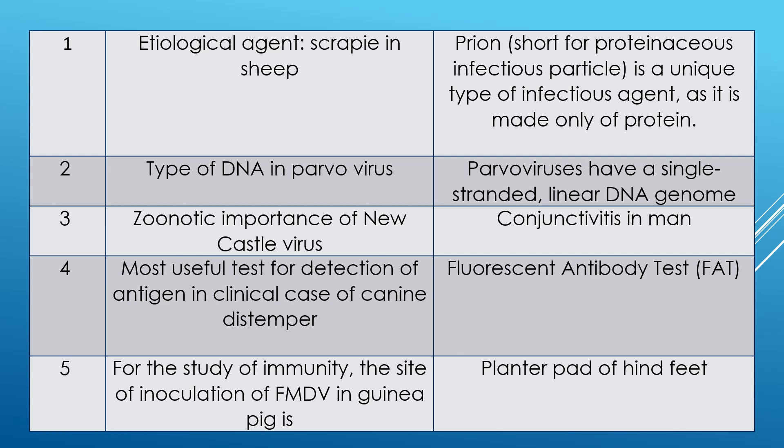Last question 25: for the study of immunity, the site of inoculation of foot and mouth disease virus in a guinea pig — which site? The answer is the plantar pad of the hind feet of the guinea pig is used. This is also a frequently asked question.